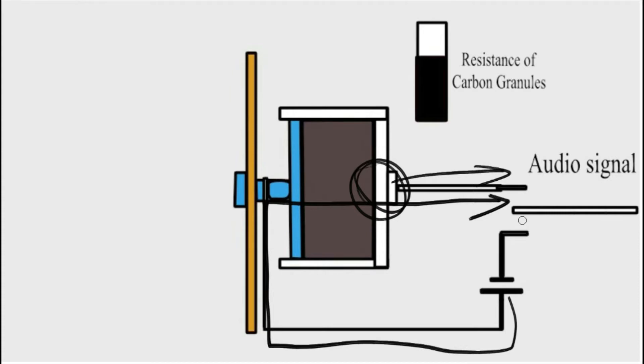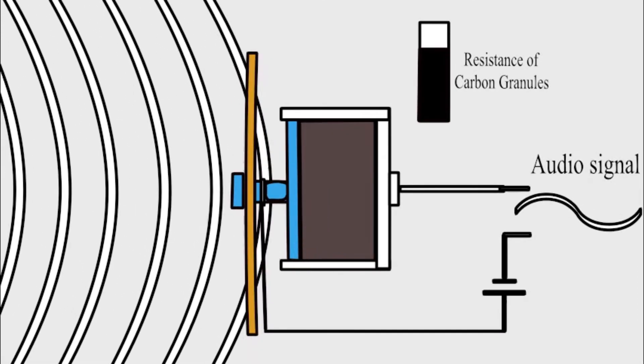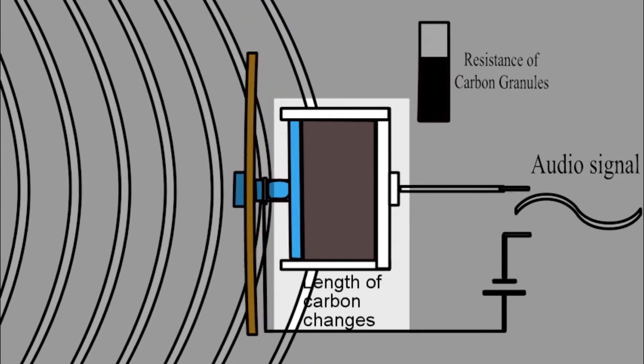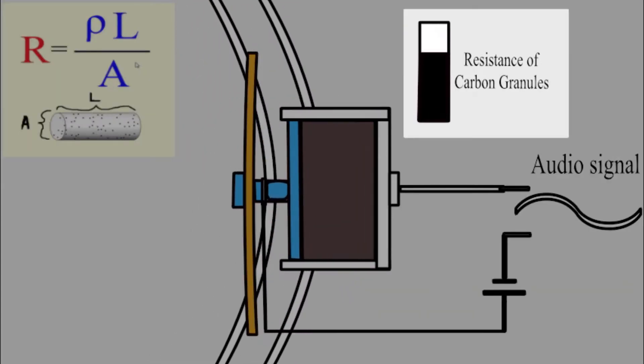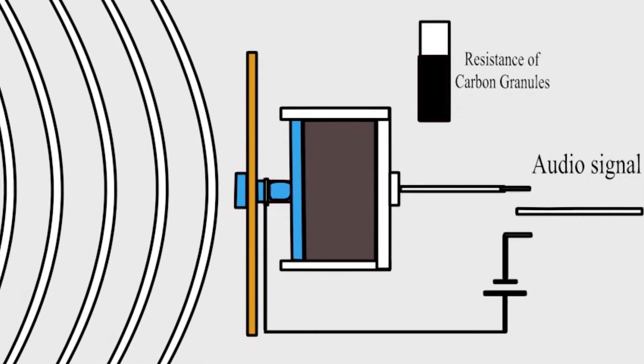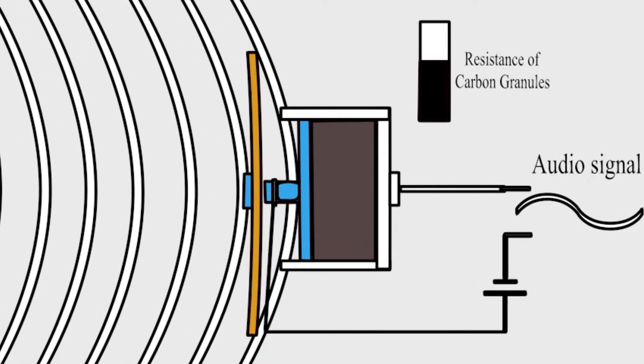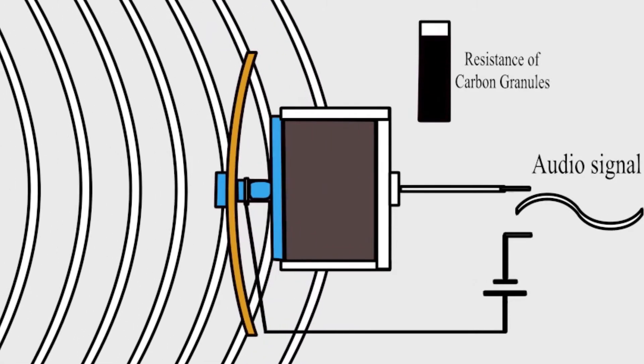Normally, you'll get a stable electric signal coming out of this output. When sound waves hits the diaphragm, the length of the carbon granules begins to change. And according to the equation of resistance, if the length of the carbon granules change, then the resistance of the carbon granules will also change. And due to this changing resistance, the electrical signal at the output also changes over time.